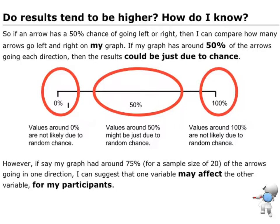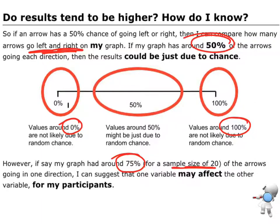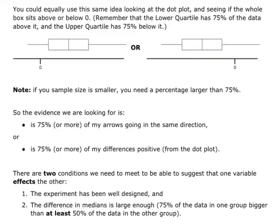So, what I need to think about is I want to compare how many arrows go left or right on the graph. If I'm getting results around about 50, that tells me half of the arrows are going one way, half of them are going the other way. These results could just be due to random chance. Whereas, if I get values close to the 0 or close to 100, so lots of arrows going in one direction or the other, and I'm going to use that value of around about 75% as my guide, that's when I have a sample size of 20, then if I've got 75% or more of the arrows going in one direction, that means I'm a lot more confident that one of the variables could affect the other variable for my participants that I have in this experiment.